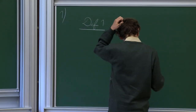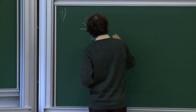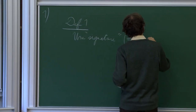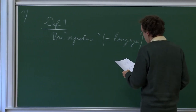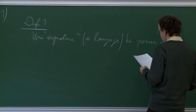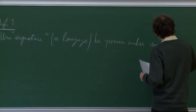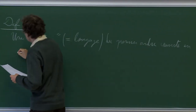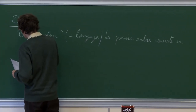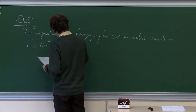We will first introduce the notion of signature. A signature — meaning language — is first order. All the language, all the things we consider here, are first order. A language consists of three possible types of objects. First, what we call sorts. These are names of objects.